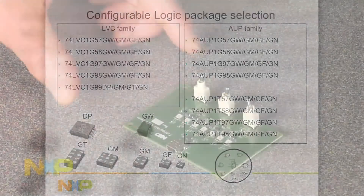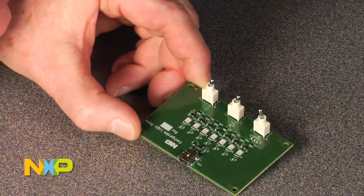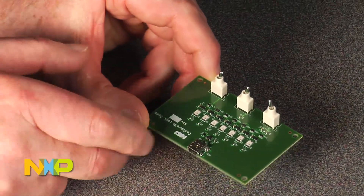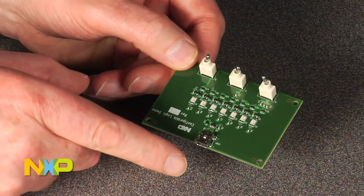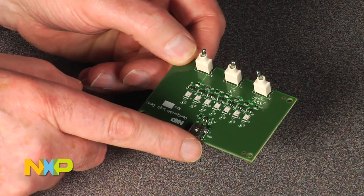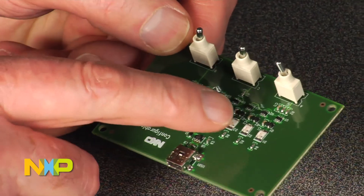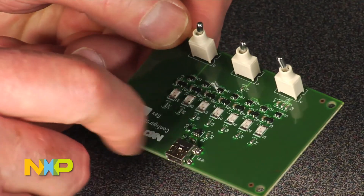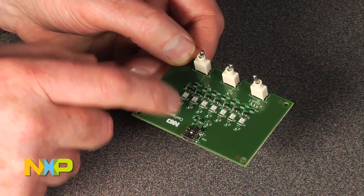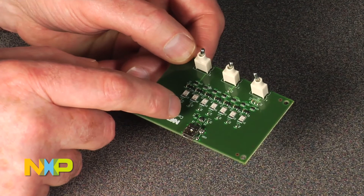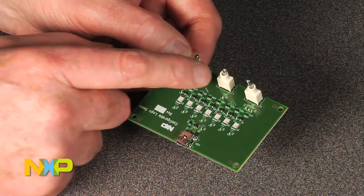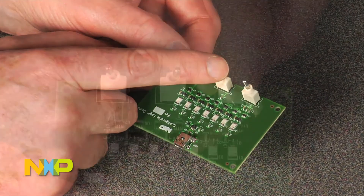To help you evaluate our configurable logic functions, we have a demo board available. The demo board is powered by a USB connector and has numerous LED lights to indicate which function the device is performing. The logic device can be configured by toggling these three toggle switches.